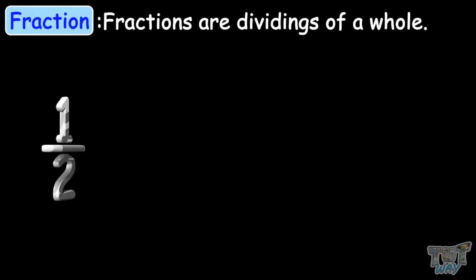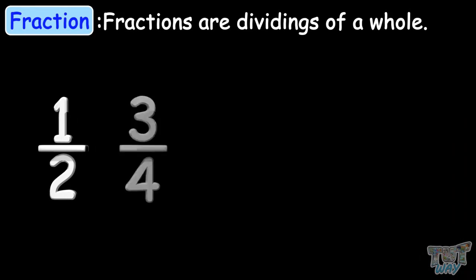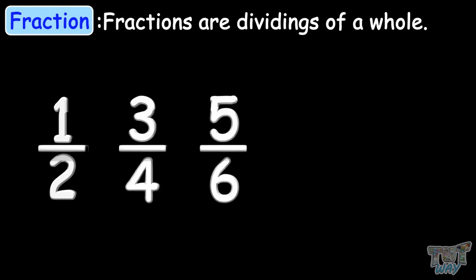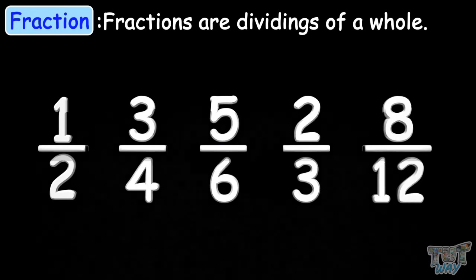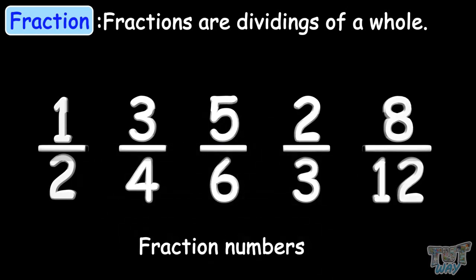We know fractions are dividings of a whole. 1 by 2, 3 by 4, 5 by 6, 2 by 3, 8 by 12 — all these are fraction numbers and they represent dividings of a whole. Now let's learn what are like fractions.